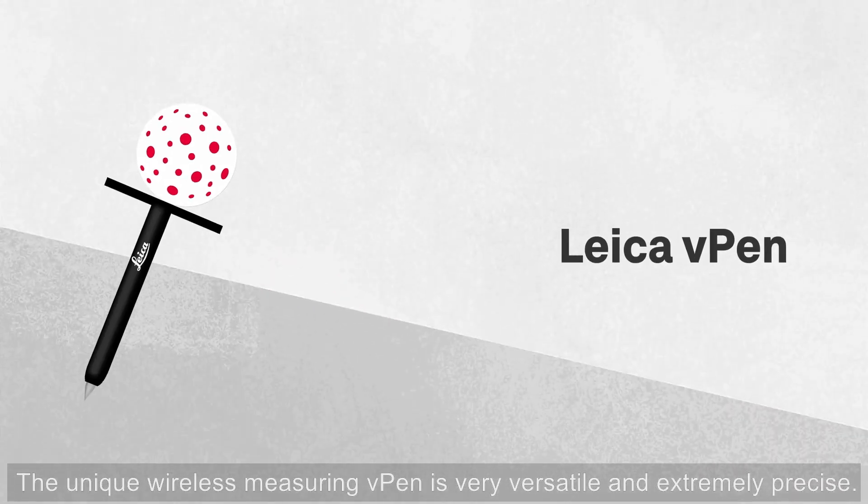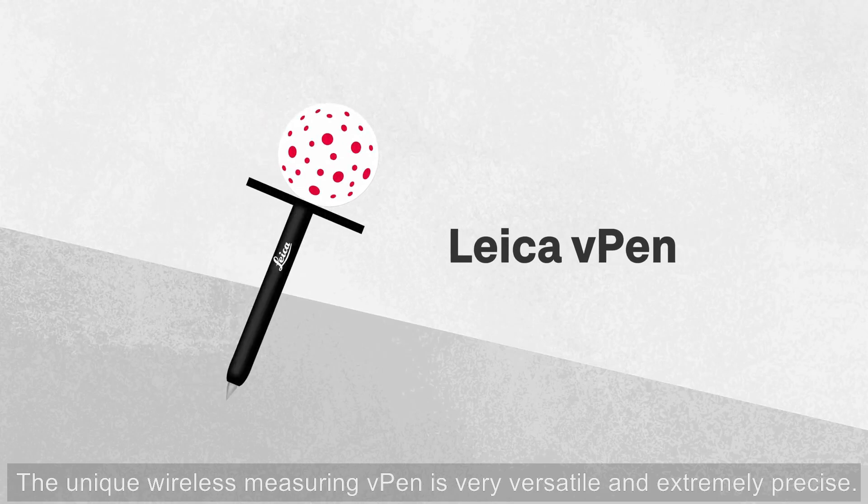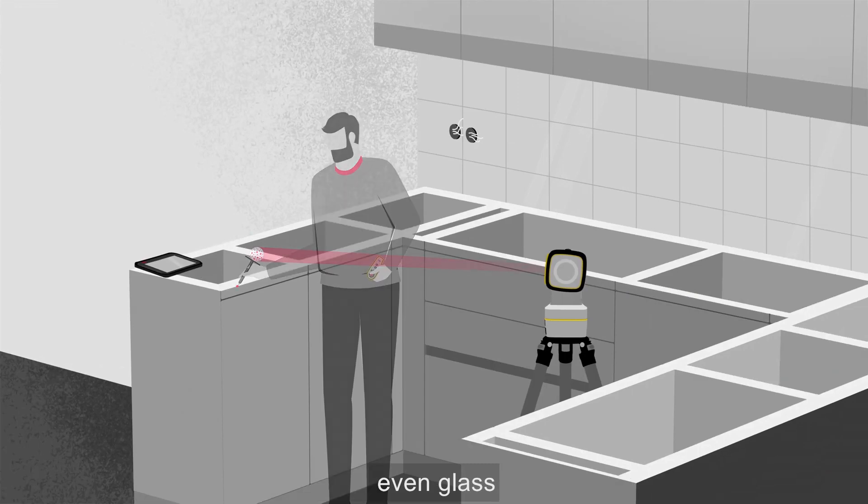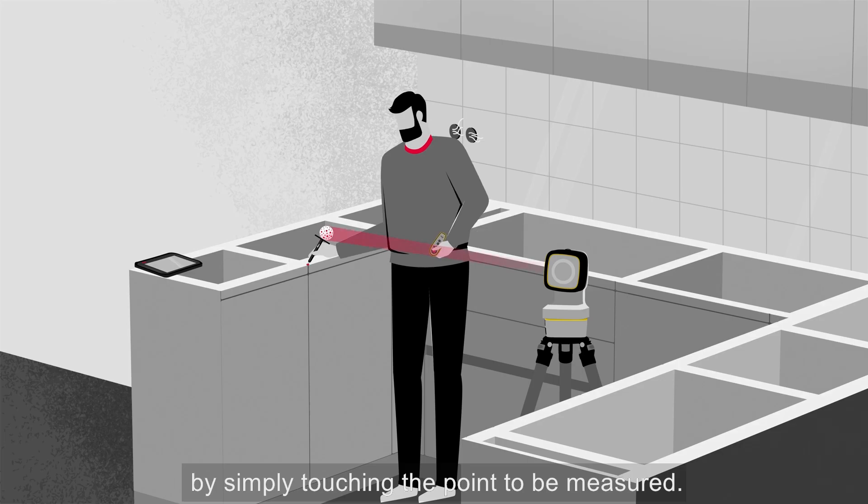The unique wireless measuring v-pen is very versatile and extremely precise. Use it to measure on any surface, even glass, by simply touching the point to be measured.